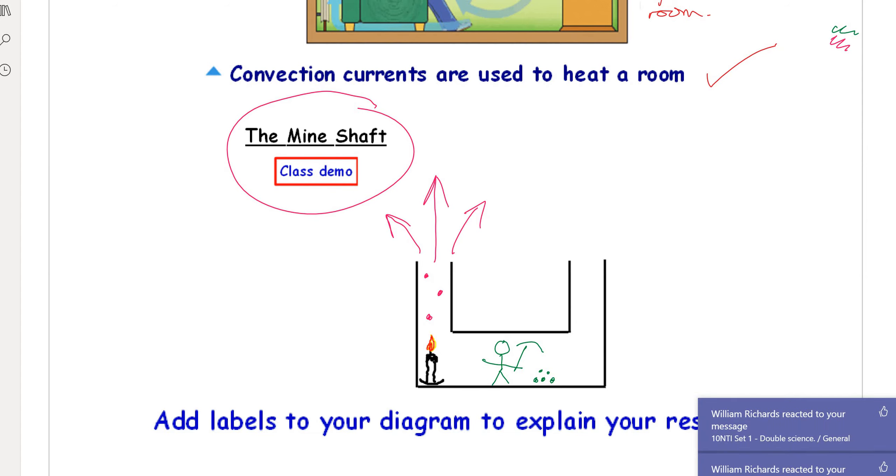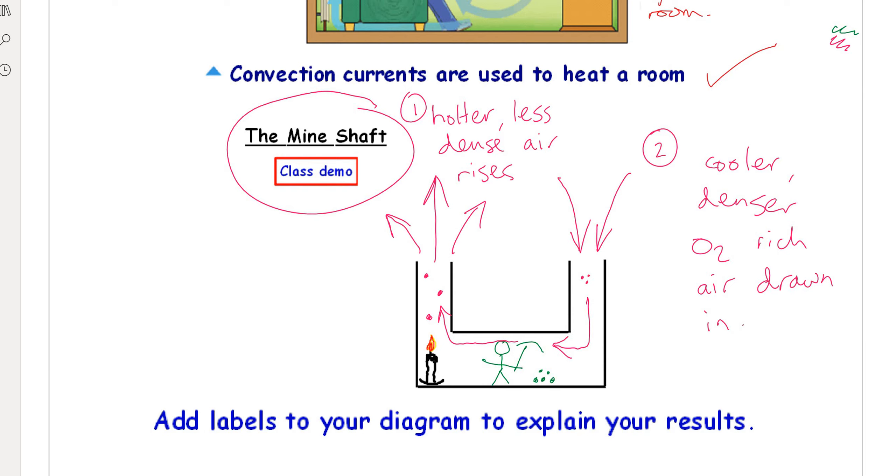This air, the air within the mine shaft, has to be replaced. So you get cooler, denser air being drawn in—cleaner, oxygen-rich, denser air. So that is the mine shaft demonstration, and here we have the answer.